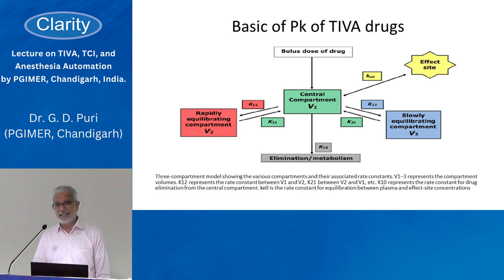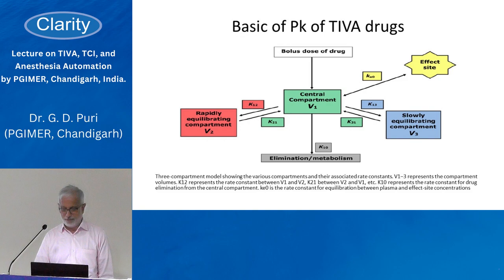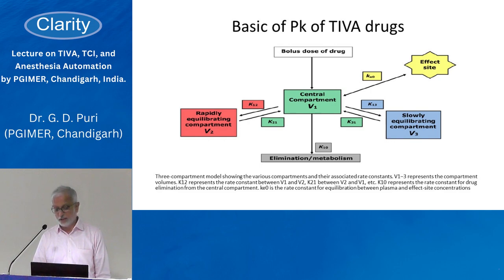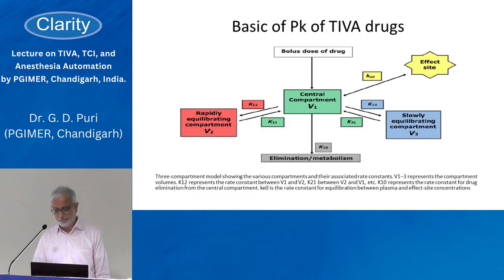That's the reason for context-sensitive half-life: if you give a drug for a longer period, it takes longer for the plasma concentration to decrease, because it is stored in peripheral tissues from which it keeps moving back into the central compartment. There is a distribution coefficient from the central compartment to the effect site, but there is a fixed elimination — if plasma concentration is kept constant, there is a fixed elimination with a constant KIO, which eliminates the drug at a fixed rate.